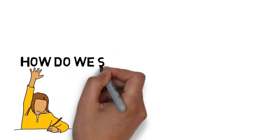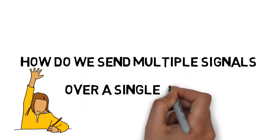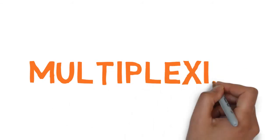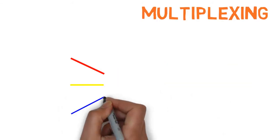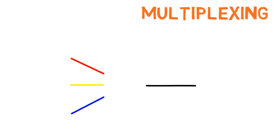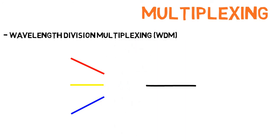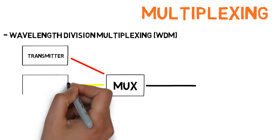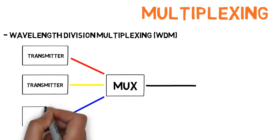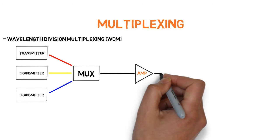Over time, a technique was developed to send multiple signals over a single fiber — it's called multiplexing. There are different types of multiplexers, which all combine several signals into one transmission path. The type we will focus on today is Wavelength Division Multiplexing, or WDM. A multiplexer, or MUX, selectively combines many signals across different wavelengths and transmits them all simultaneously across a single optical path.